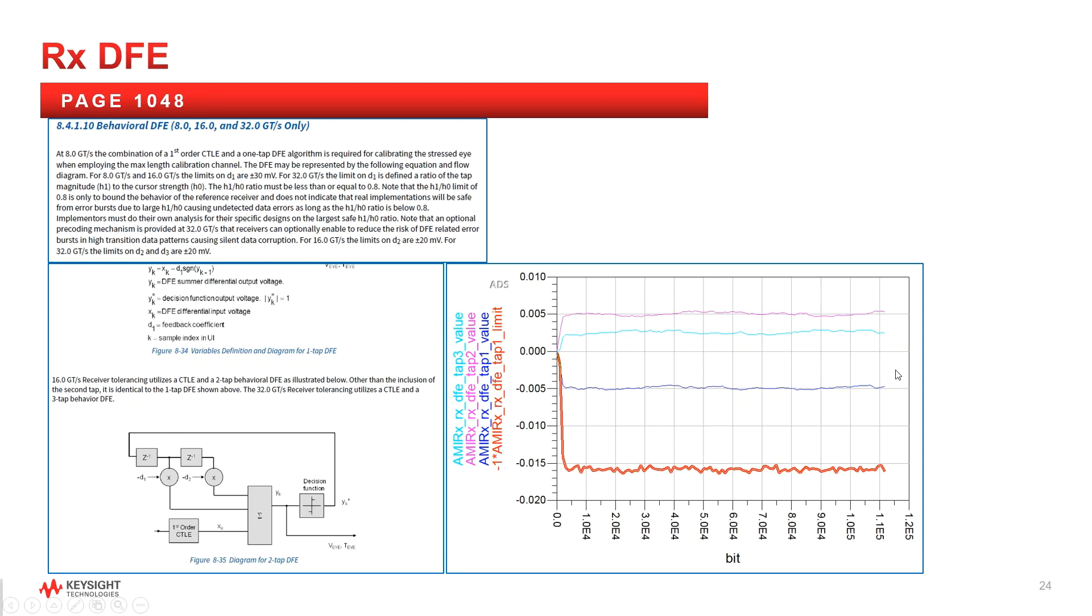Receiver decision feedback equalization. Previously for Gen 4, a two tap DFE was assumed. Now for Gen 5, a third tap is added. Previously a constant millivolt limit was assumed for the DFE coefficients, but for Gen 5, there's now a ratio requirement. The ratio is H1 over H0 must be less than 0.8, which is a tap one magnitude over the cursor strength.